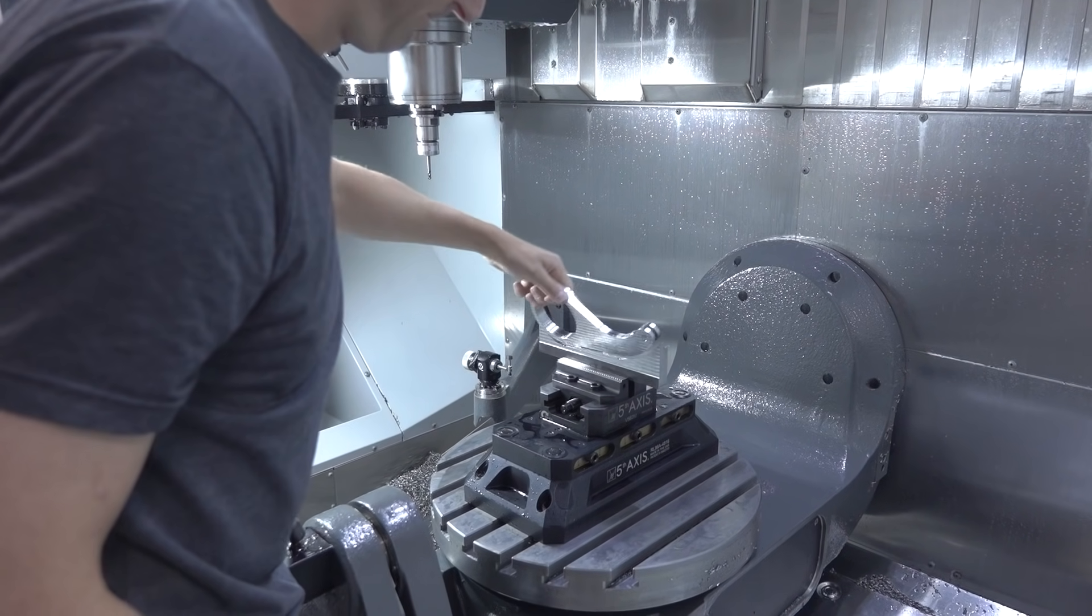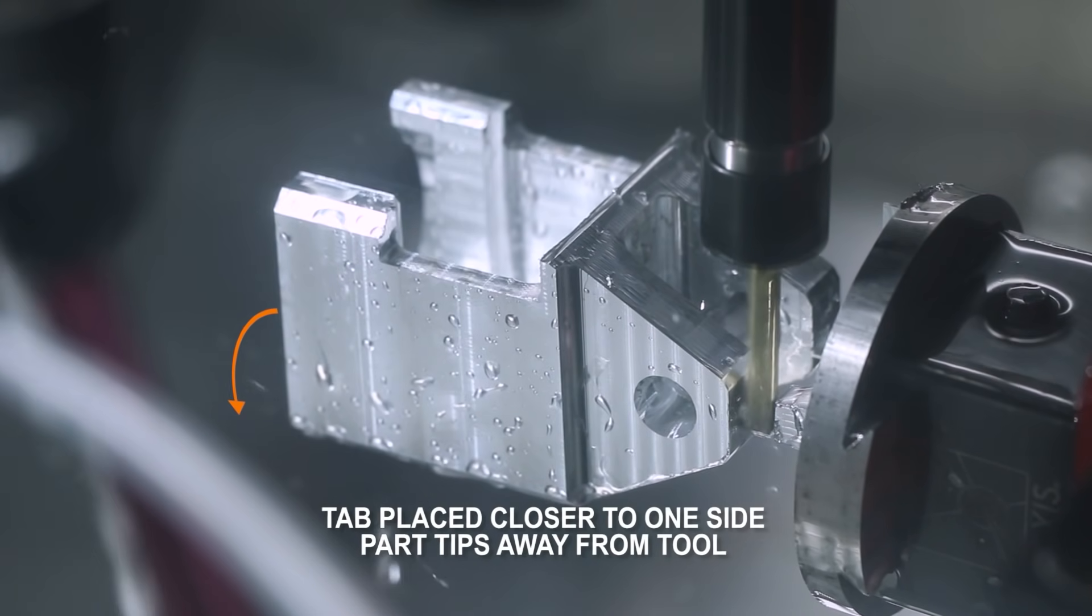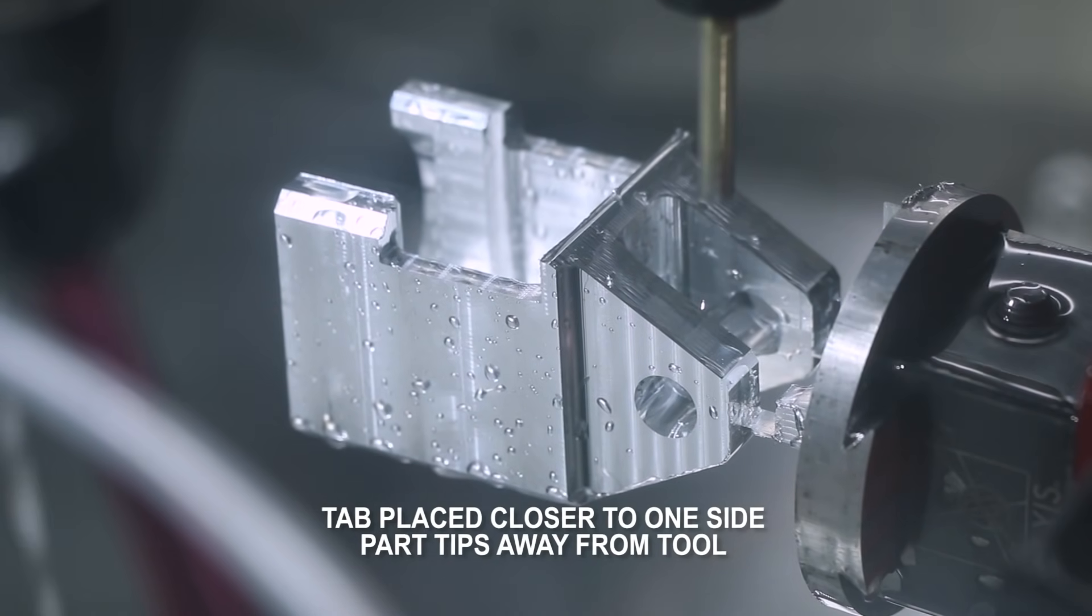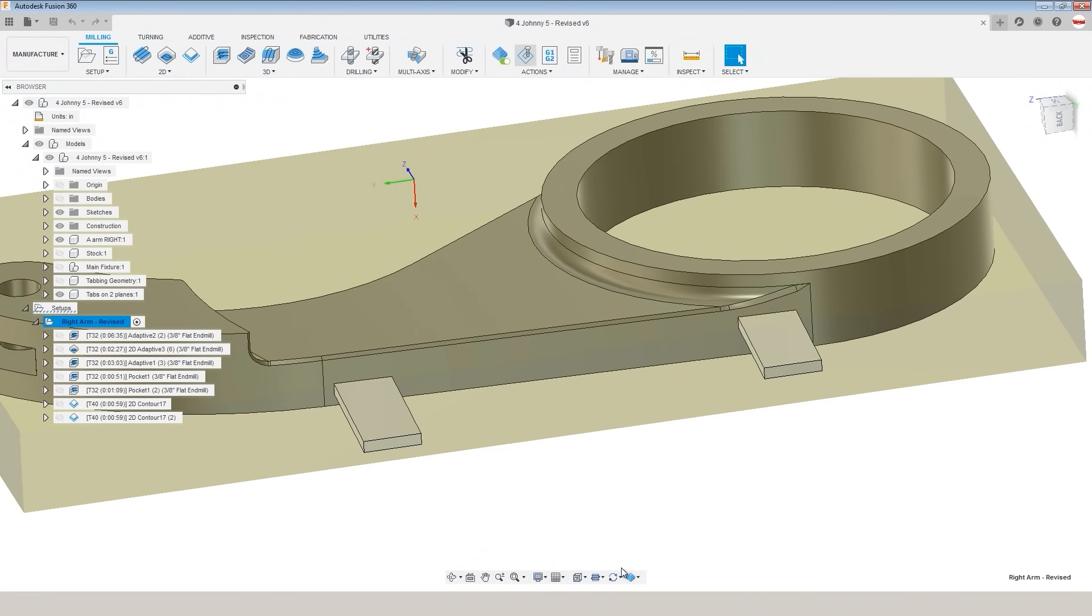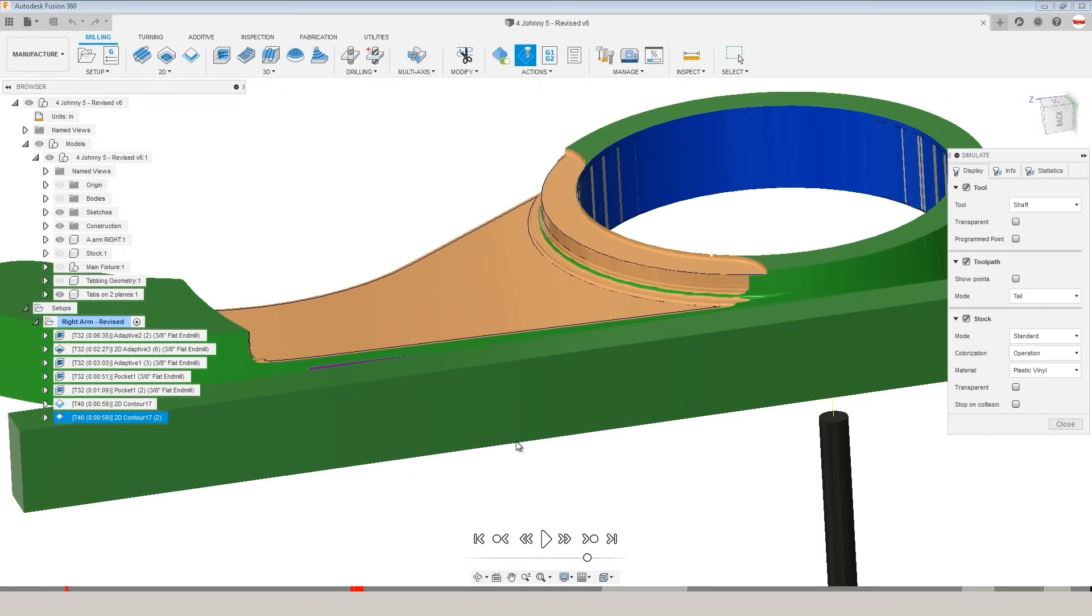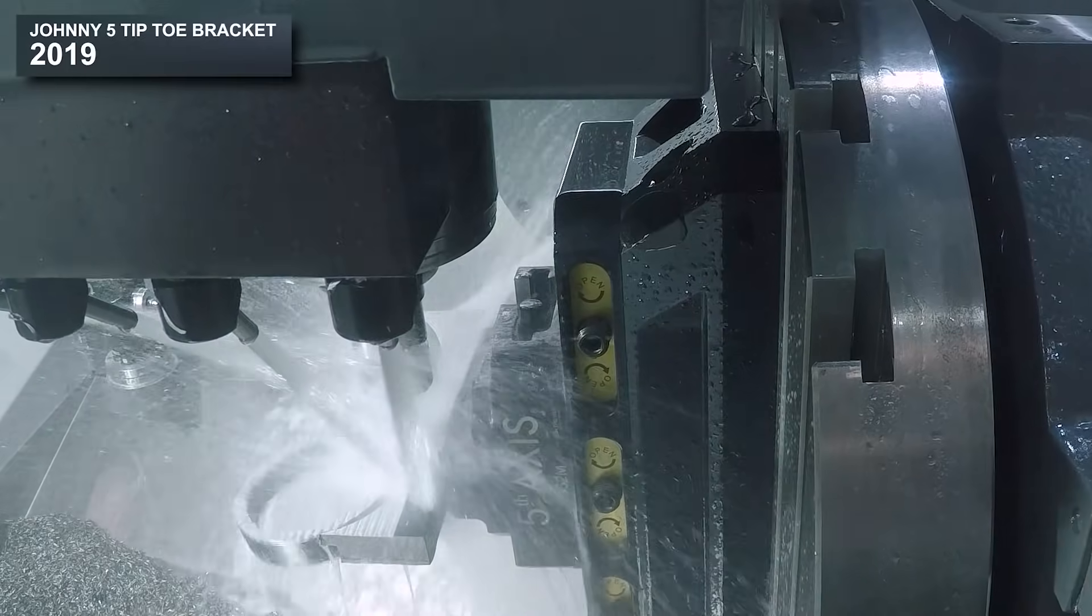Talked about the benefits of tabbing with multiple tabs either on the same plane or a better strategy is to put two or three tabs on two different planes. This helps prevent the part from flopping away. Flopping parts look great on Instagram, but it's actually much nicer to have the part held stably in place until the absolute end. And then we talk about proper window machining.